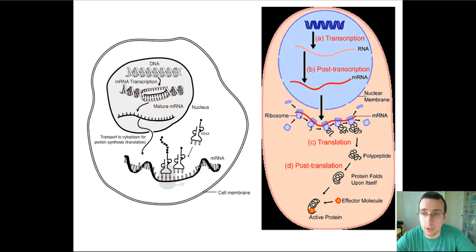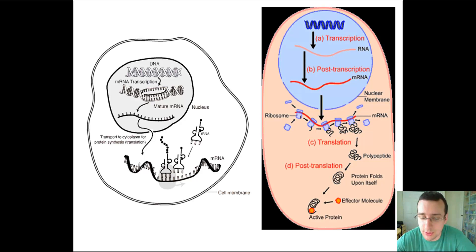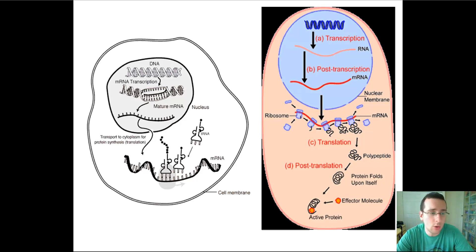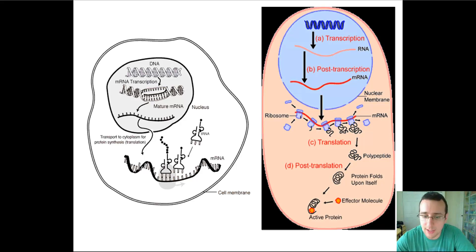Now that we've talked about the difference between DNA and RNA, the different kinds of RNA, the difference between protein and DNA's roles in the cell, and how the genetic code works, we can see where we're going with protein synthesis. DNA gets transcribed to RNA, which gets transcribed to protein in accordance with the codon table. But what cellular process actually makes this happen? That's protein synthesis, and it happens in several stages.